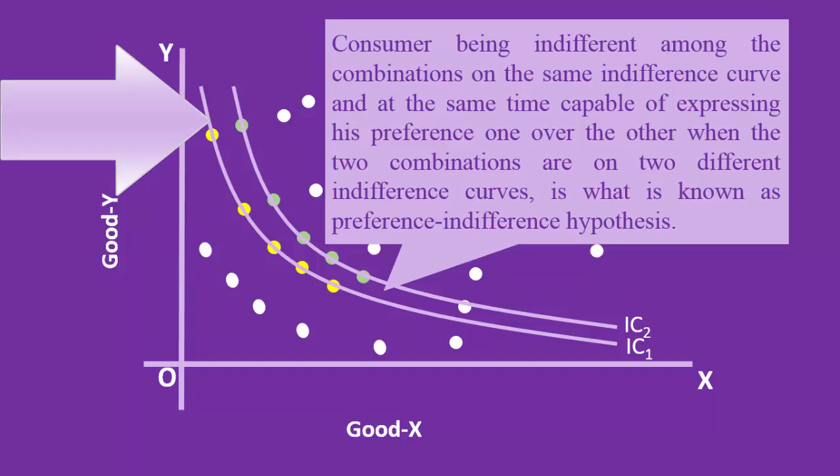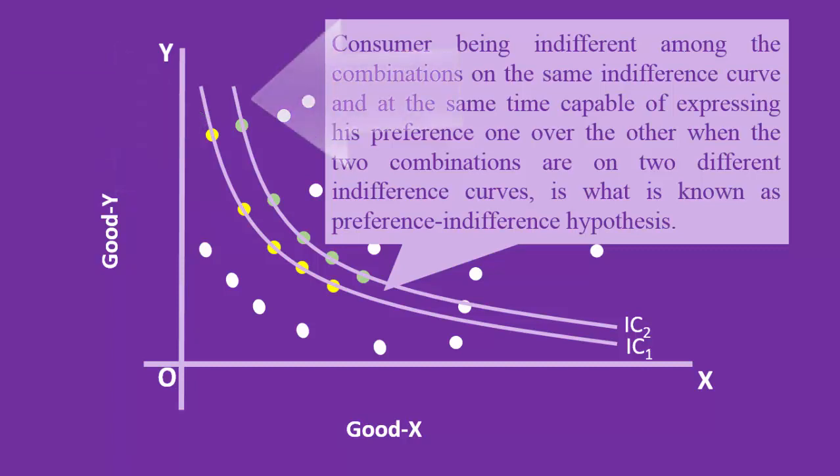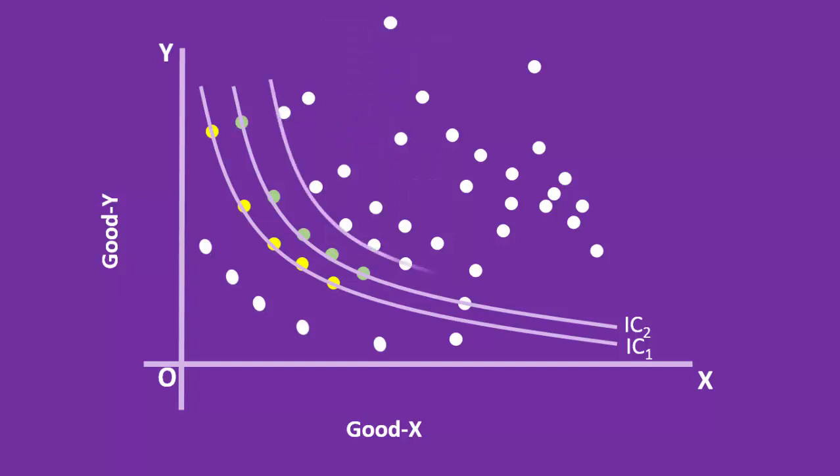Consumer, by identifying one group of combinations, obtains IC1. And now, from his second group, he gets IC2. Similarly, the consumer can draw his other indifference curves.